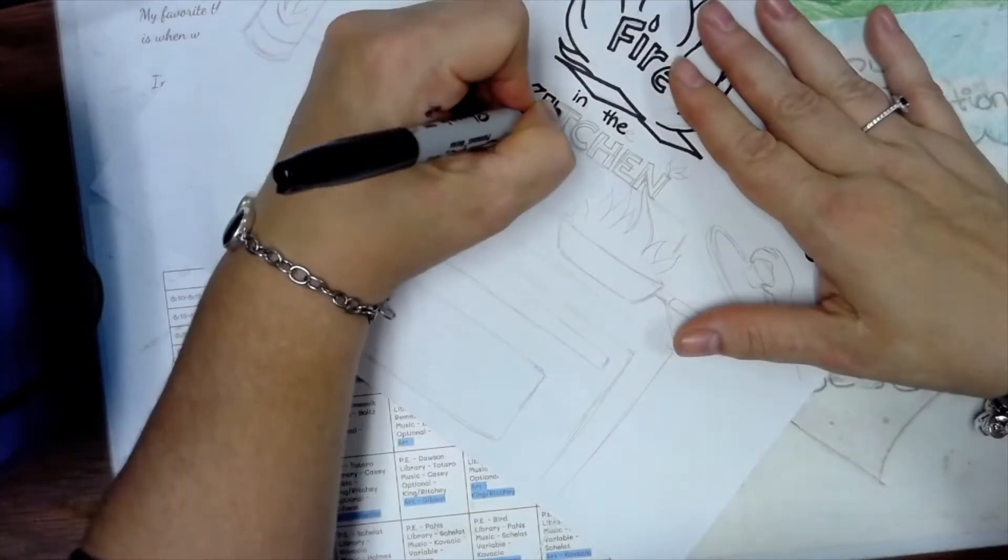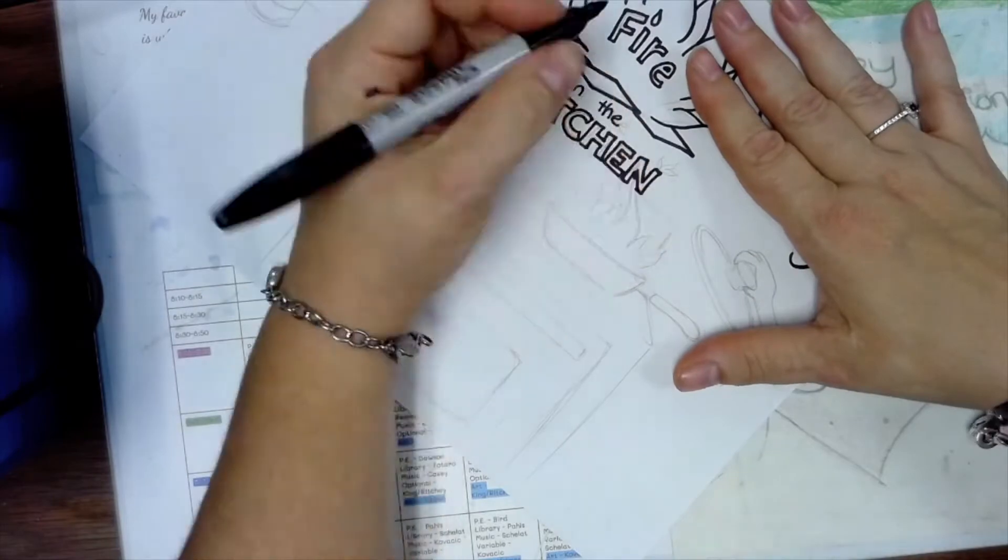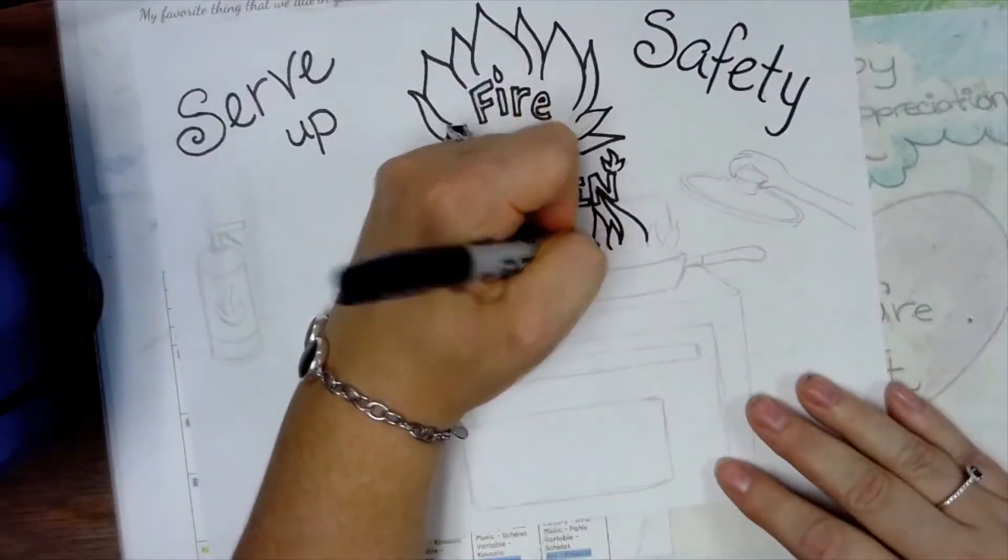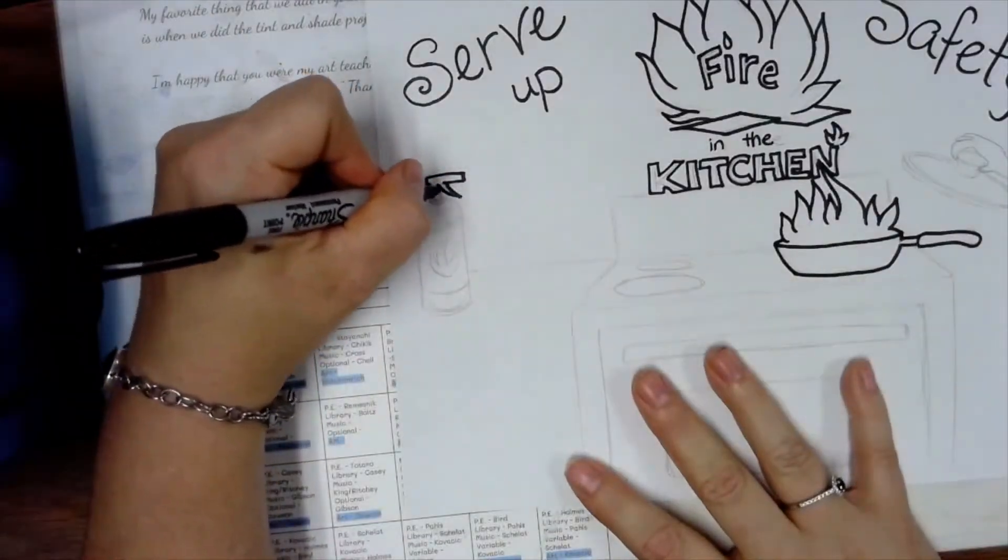So now I'm tracing all of my drawings with sharpie, which just kind of makes things pop and stand out a little bit. Again with the fire, more S-curves connected to each other.